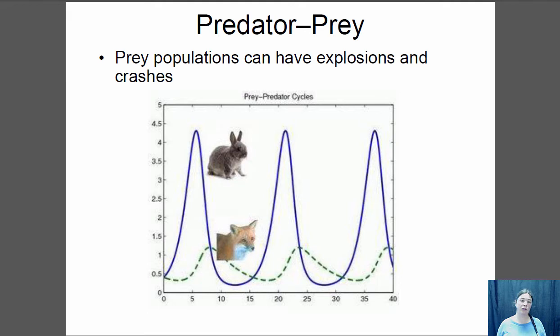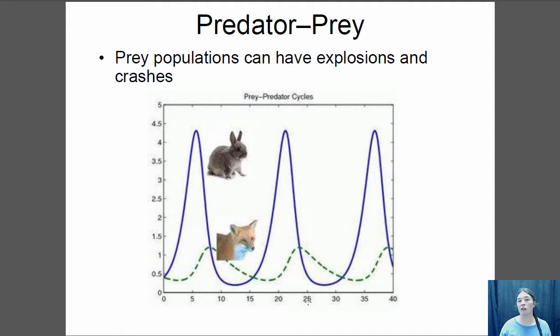In the wild, populations of predators and prey tend to be closely connected. For example, rabbits and foxes: rabbits are r-selected and can boom very quickly. When rabbit populations boom, there's lots of food for foxes, so fox populations go up. Once fox populations reach a certain point, they depress the rabbit population. Then with very few rabbits, foxes have nothing to eat, so their population goes down, which releases the rabbits to boom again. You see these cycles of explosions and crashes with predator-prey interactions.